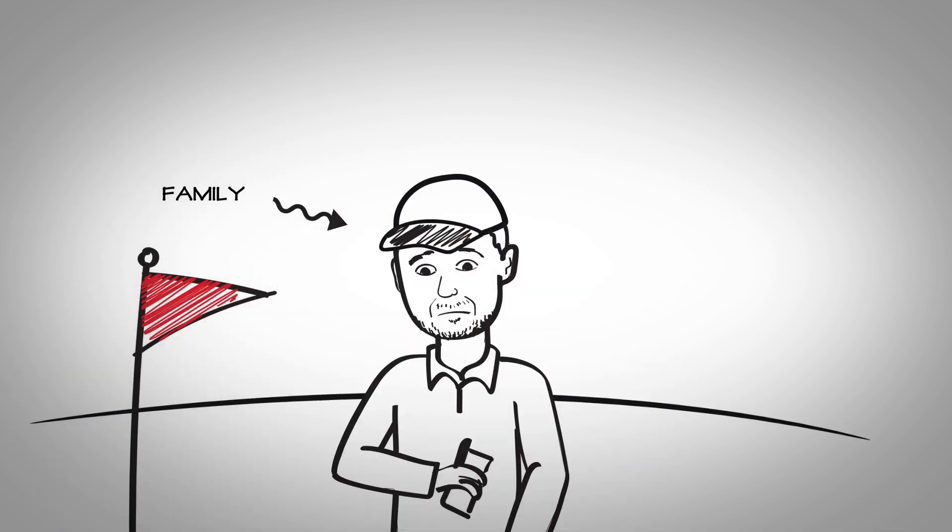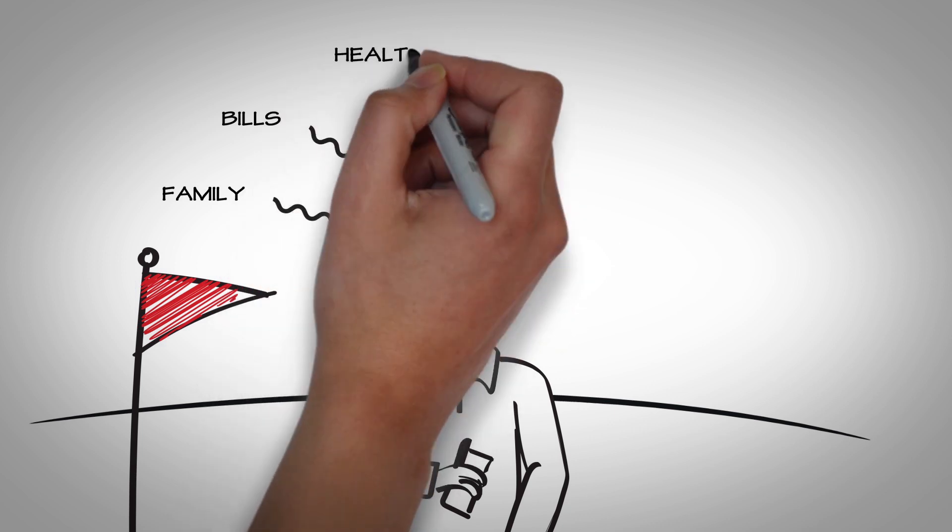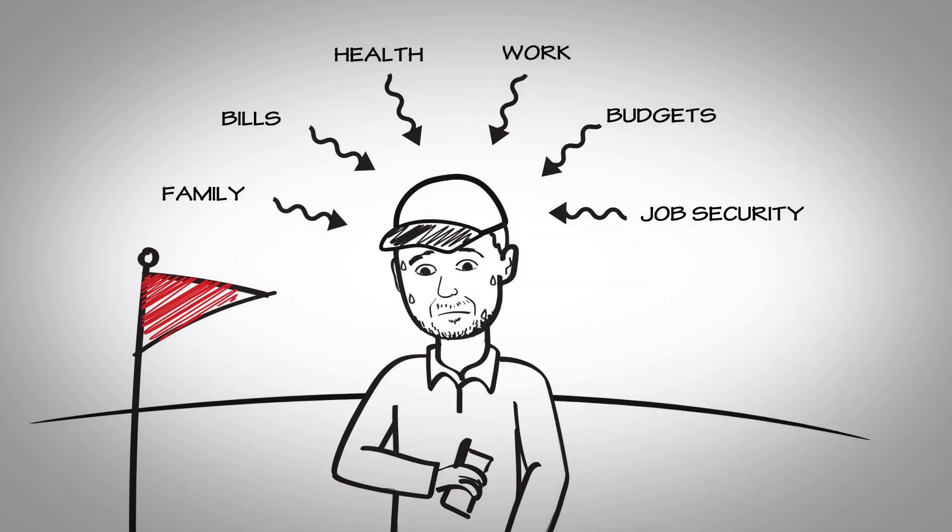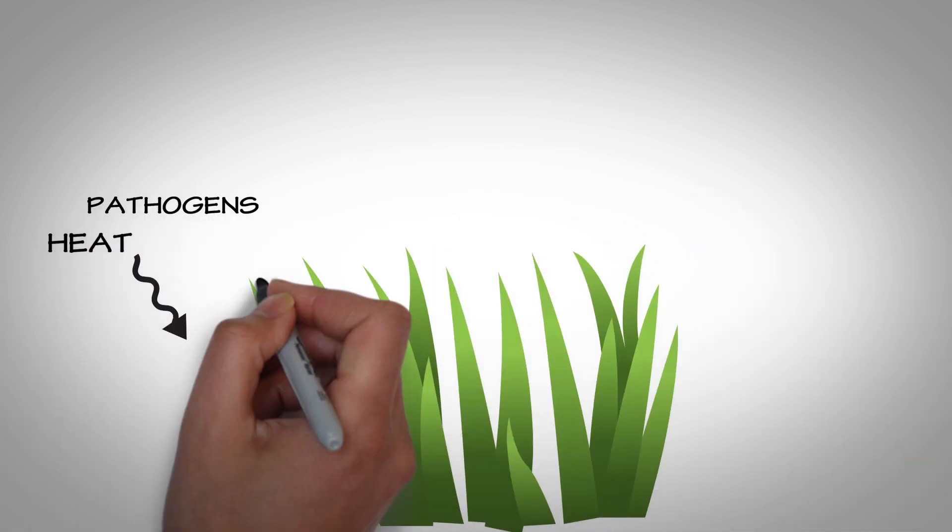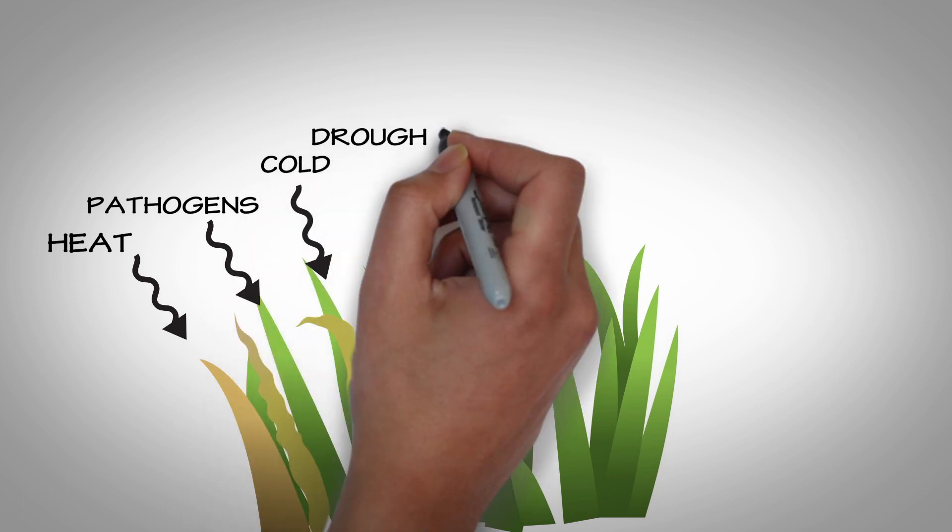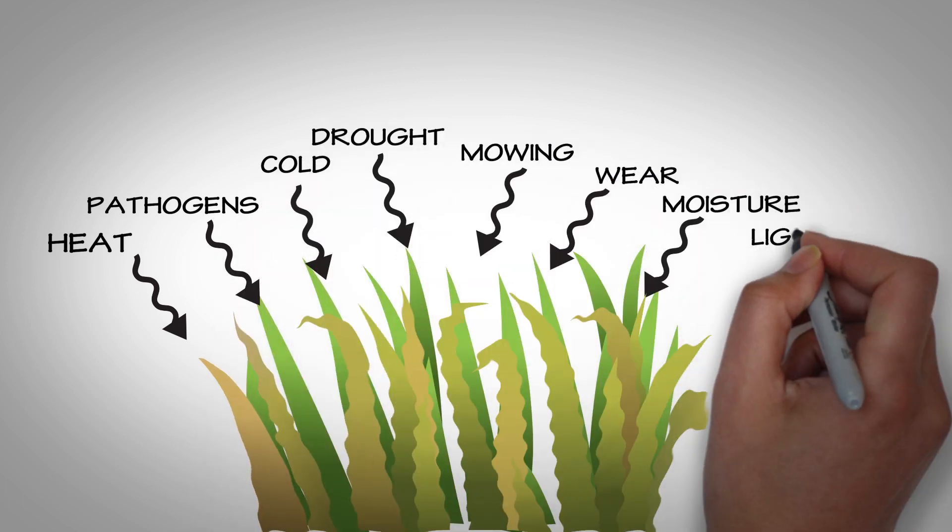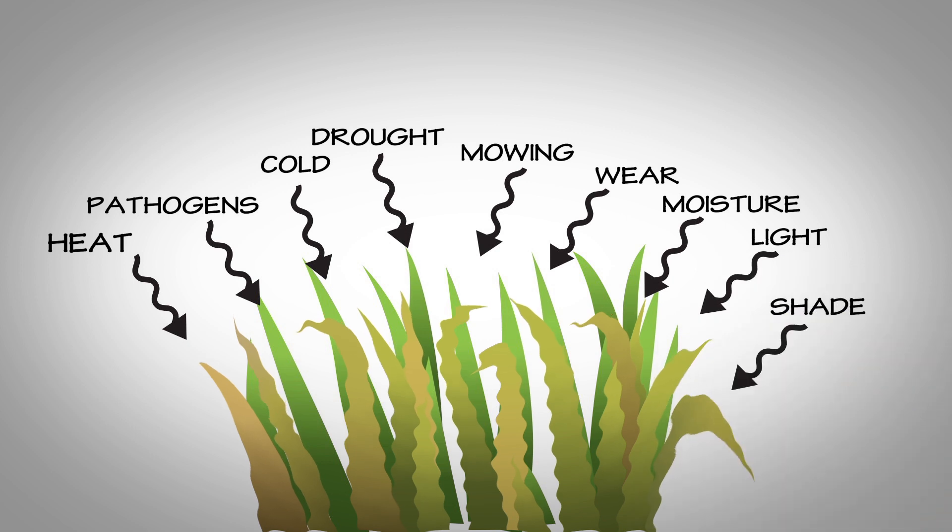For people, stress comes from many areas of our lives and the stress can affect our health, happiness and well-being. In the same way, plants and specifically maintained turf grass are subject to their own stresses that can wreak havoc with their health, aesthetics and their performance.